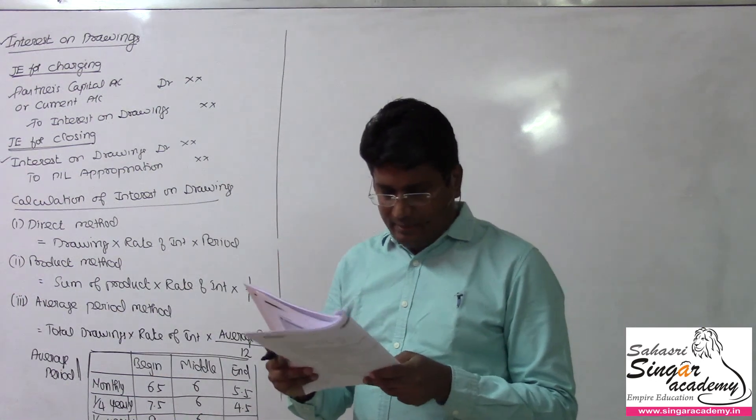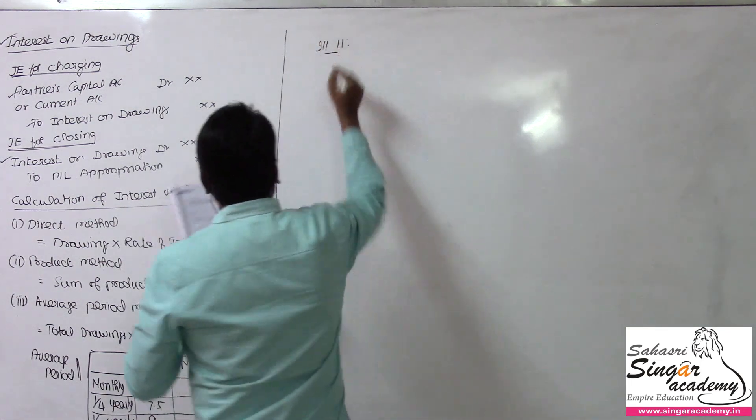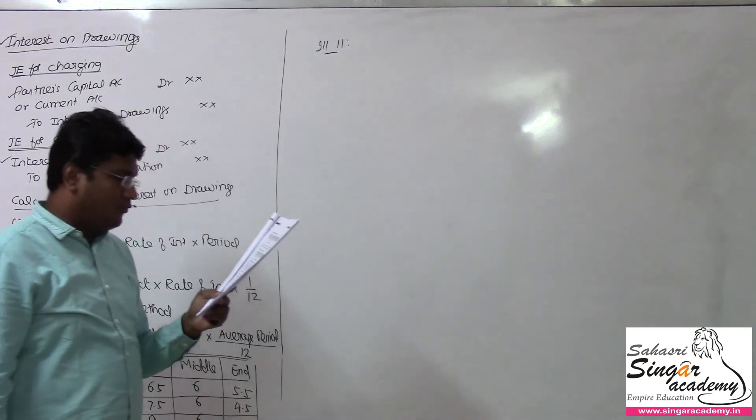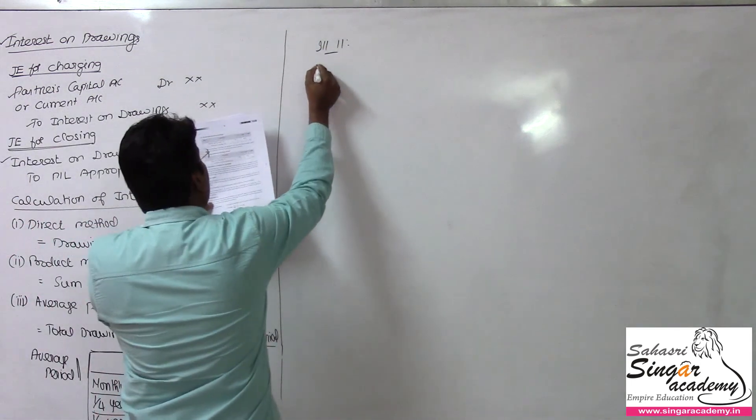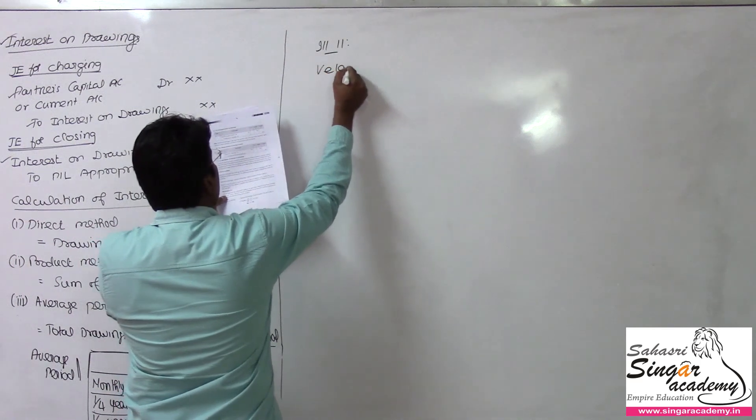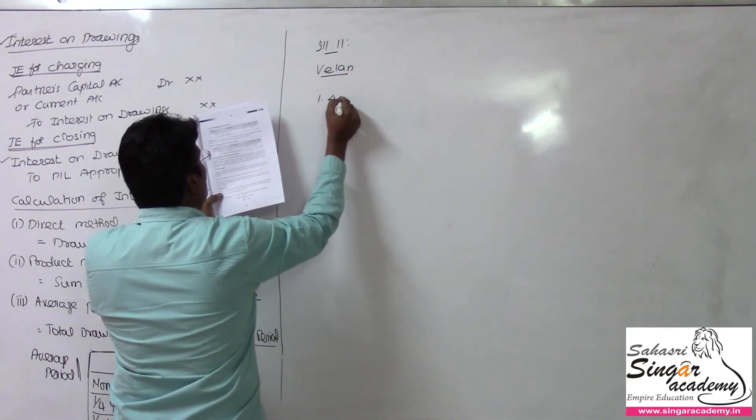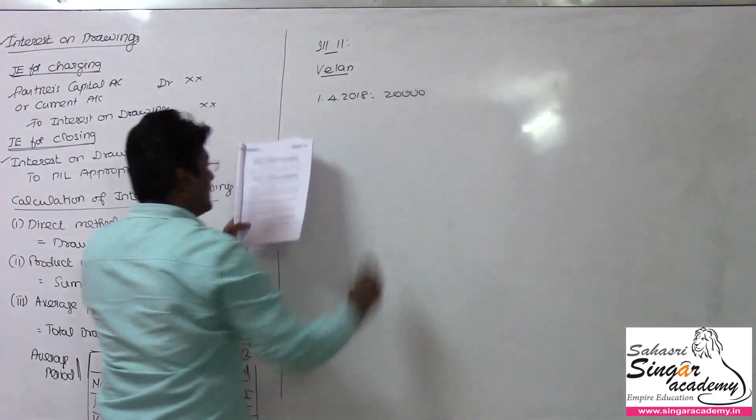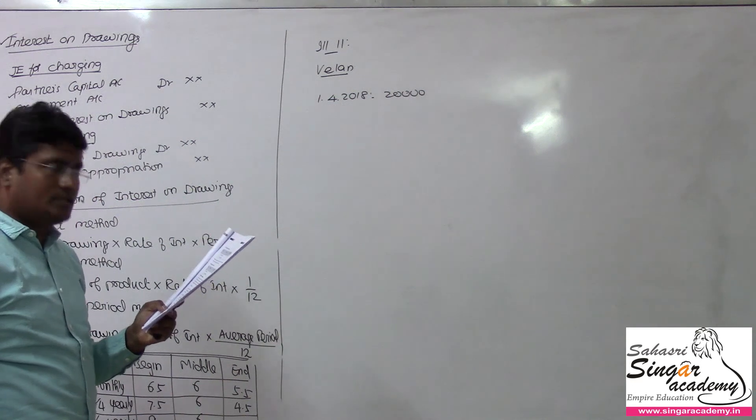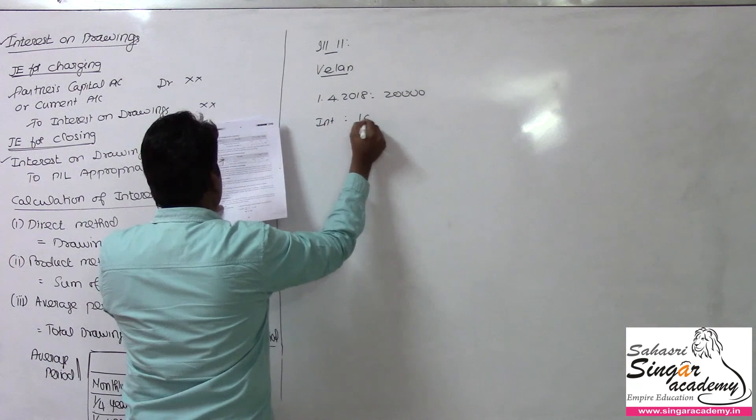Illustration 11: Velen is a partner who withdrew Rs. 20,000 on 1st April 2018. Interest on drawings is charged at the rate of 10% per annum.